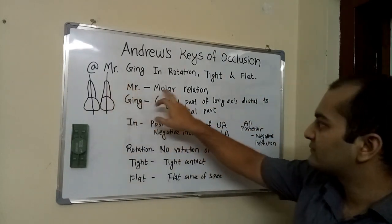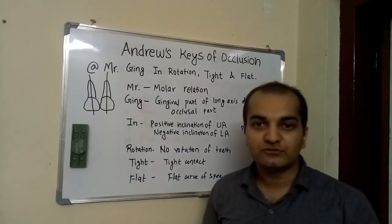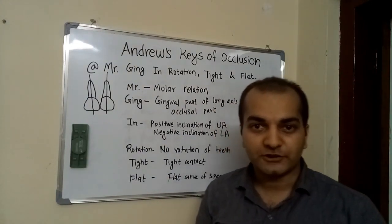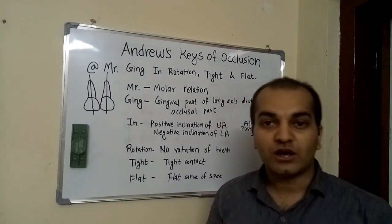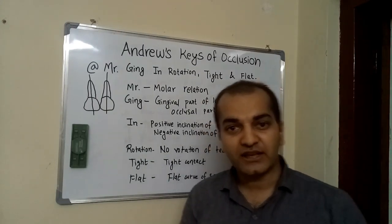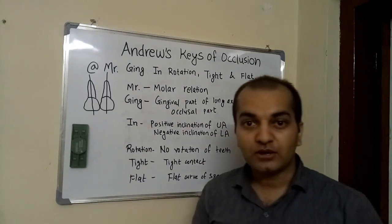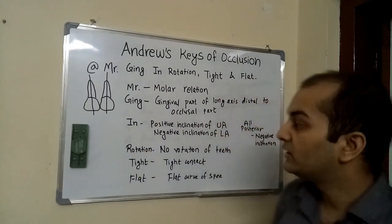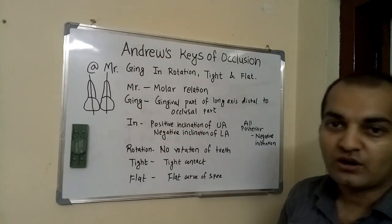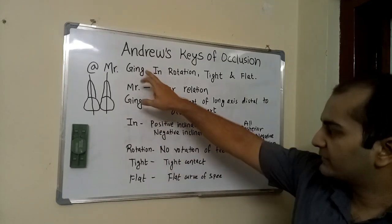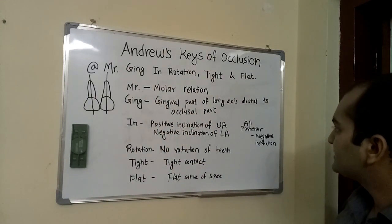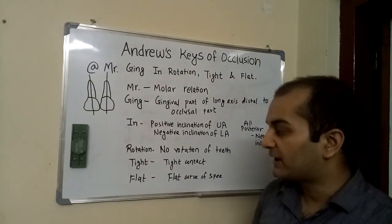MR signifies molar relation. The first key of Andrews' occlusion is that the mesiobuccal cusp of the upper first molar should occlude in the groove between the mesial and distal buccal cusps of the lower first molar. The second key is given by Zing — the angulation — where the gingival part of the long axis should be distal to the occlusal part.